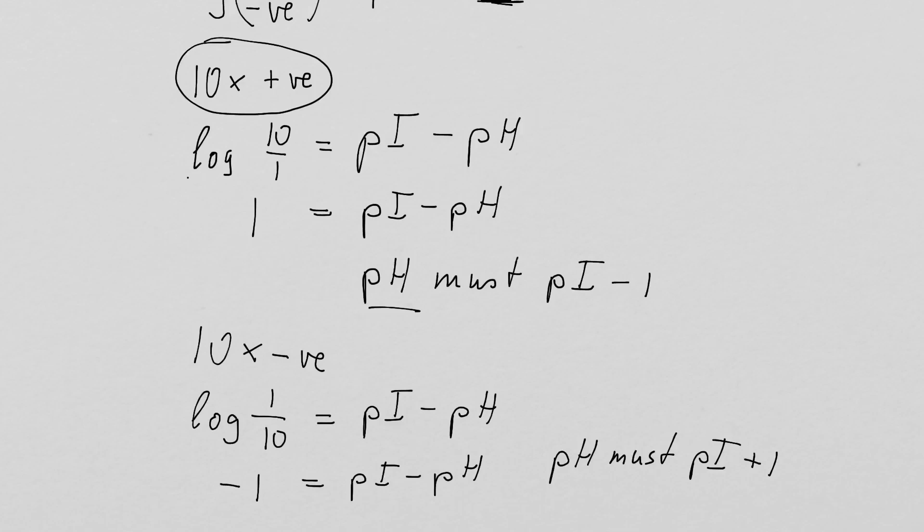So in order to get 10 times more negative charges, our pH must be pI plus 1. In the case of 10 times more positive charges, the pH must be pI minus 1. I hope this makes sense. Thank you very much for watching.